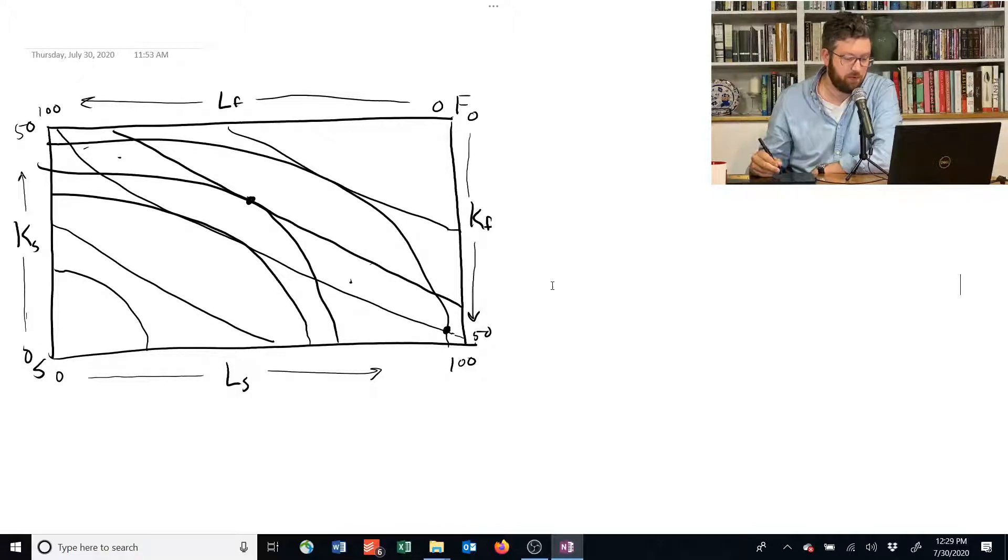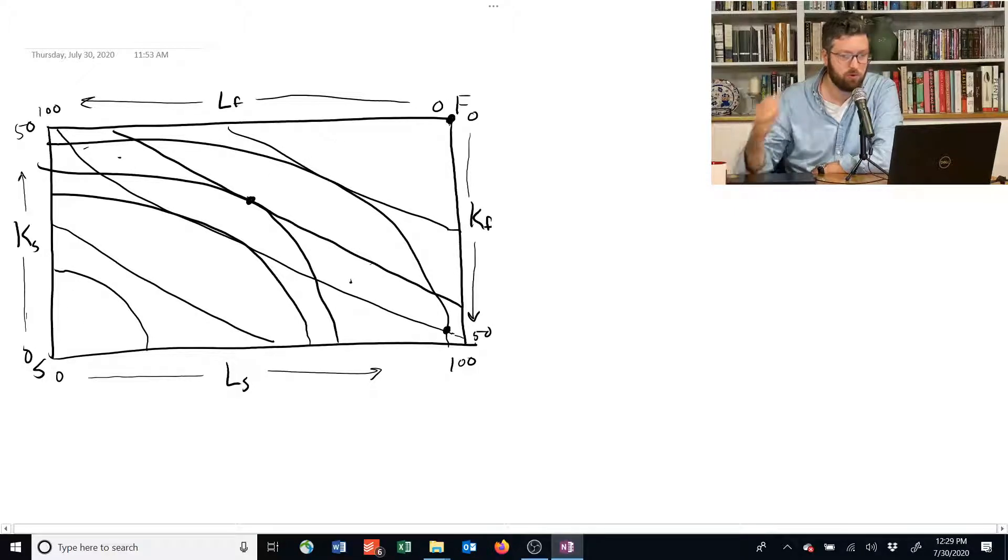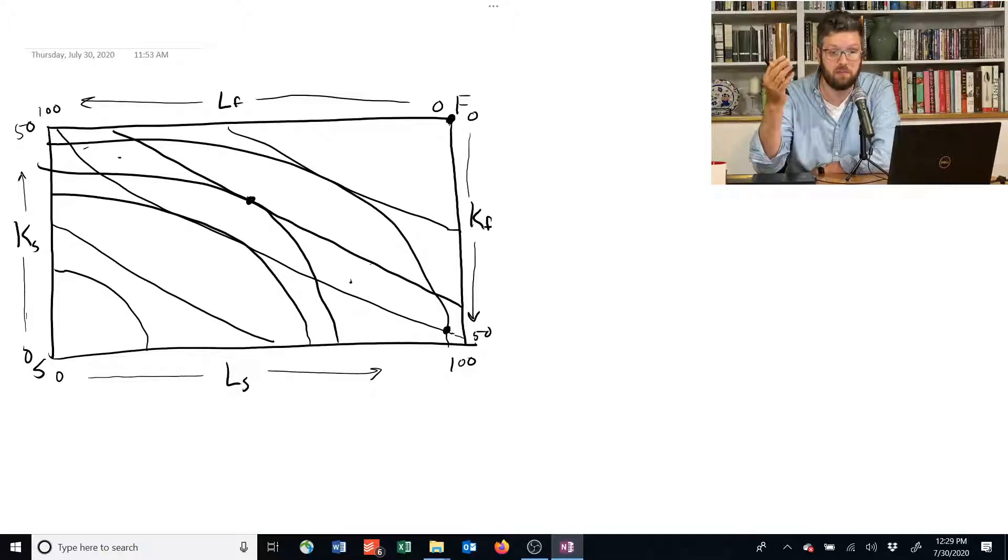For example, if we look back at this chart over here, if we're all the way over in this corner where we're allocating all of the capital and all of the labor to producing shelter, that's an efficient point. Because if we wanted to have any more food, we'd have to give up a little bit of shelter, since we can no longer replace any of the labor with some of the capital because we're using all of it.